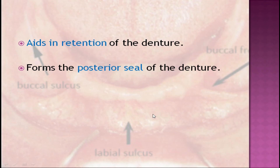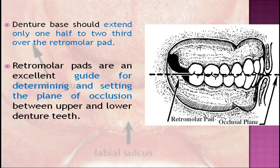The retromolar papilla is recorded as a small pear-shaped depression just anterior to the retromolar pad. It aids in retention of the denture by adding another plane to resist movement of the denture base and forms a posterior seal of the mandibular denture. Sicher described that the retromolar pad is a soft elevation of mucosa distal to the third molar — essentially a collection of loose connective tissue with an aggregate of mucosal glands. It is bounded posteriorly by the tendons of the temporalis, laterally by the buccinator muscle fibers, and medially by the pterygomandibular raphe and superior constrictor muscle fibers.